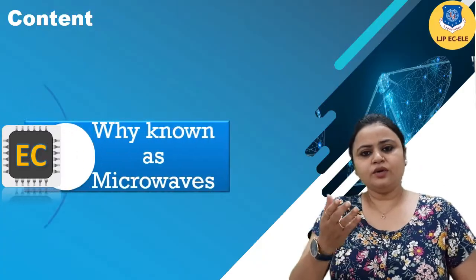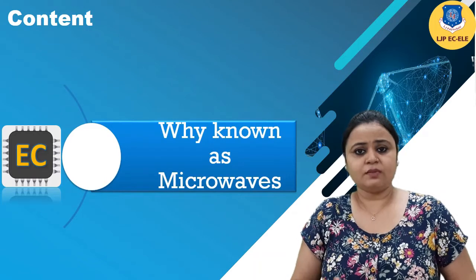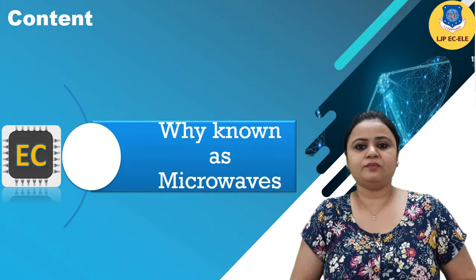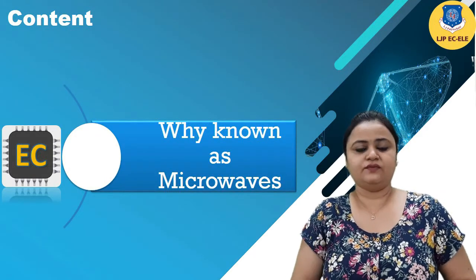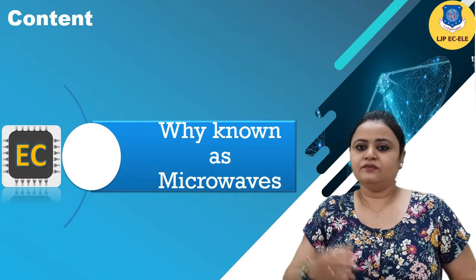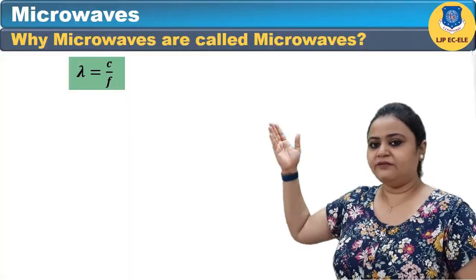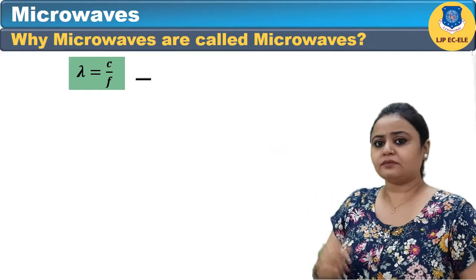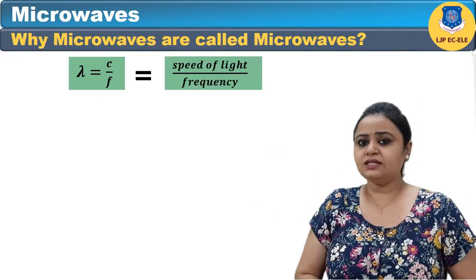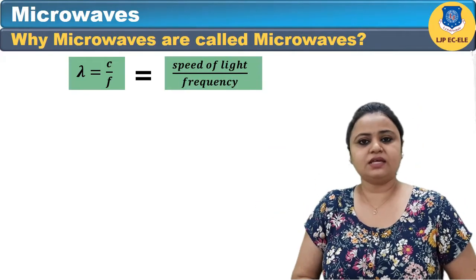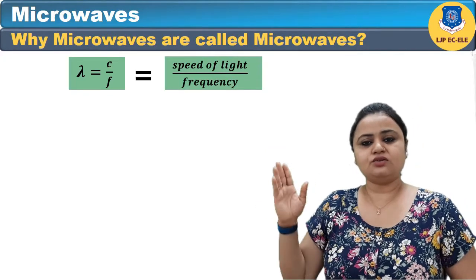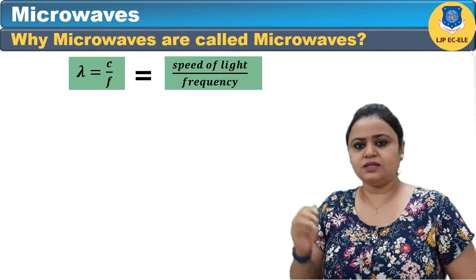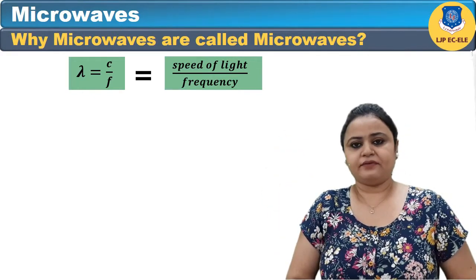Now, can you guess why microwaves are known as microwaves? The name itself is given from the wavelength defined. We all know that lambda is wavelength, which is given by C upon F, where C is the speed of light, given as 3 × 10⁸ meters per second, and frequency is F.